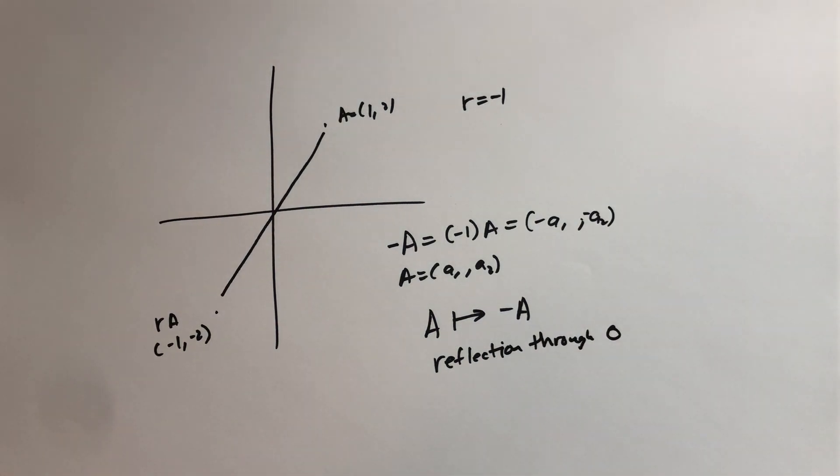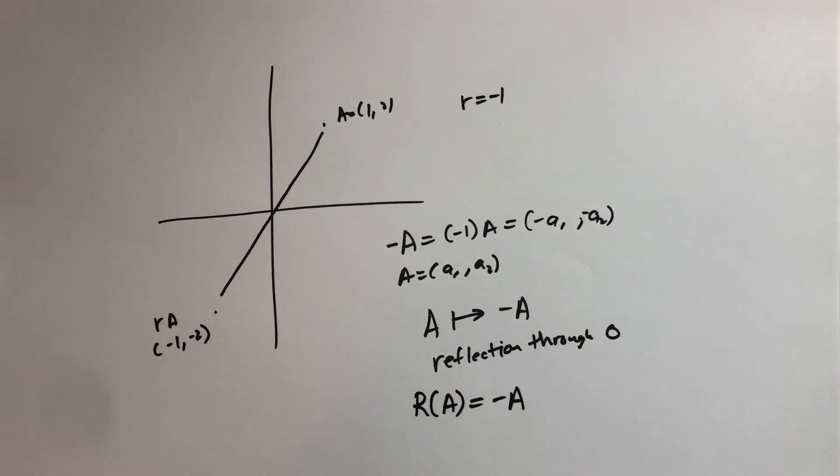And thus if we were to consider the reflection using our mapping notation we just say that's equal to minus A analytically. So we have reflections, we have dilations.